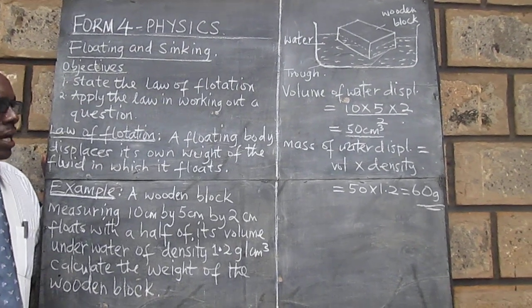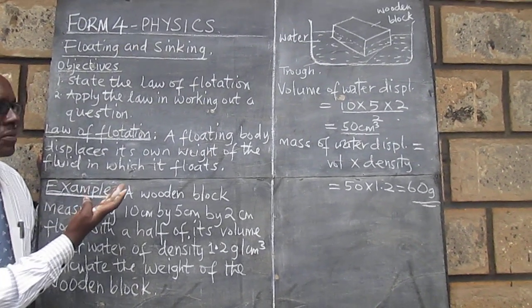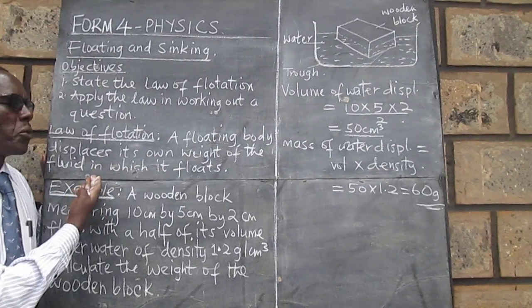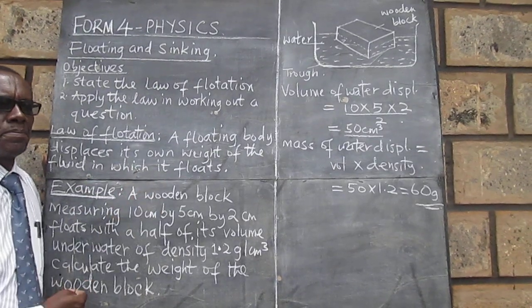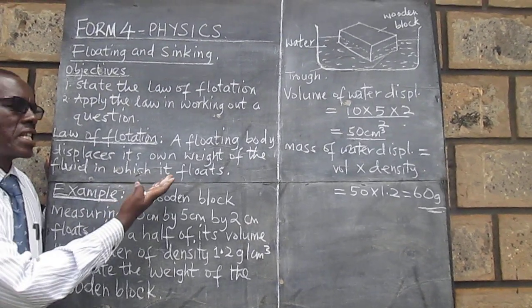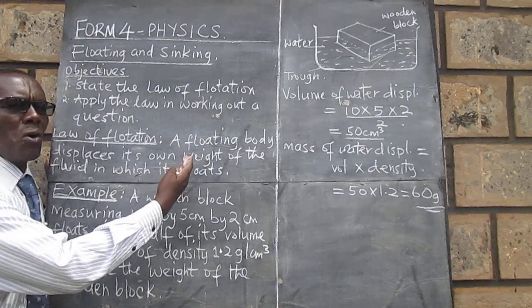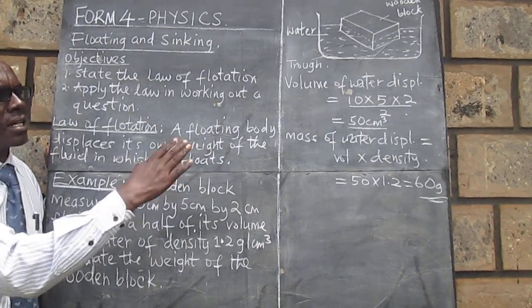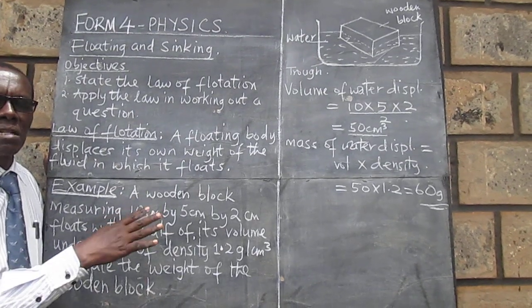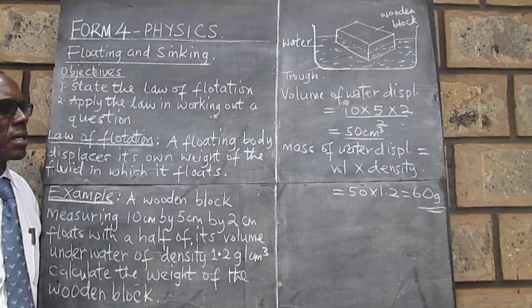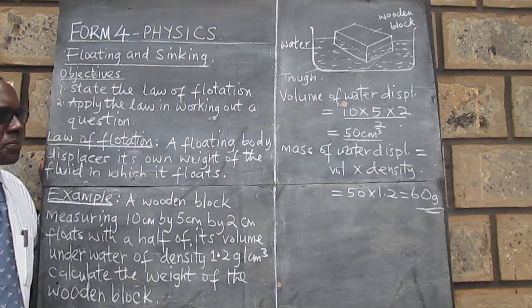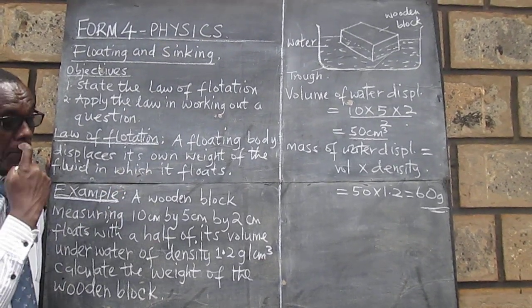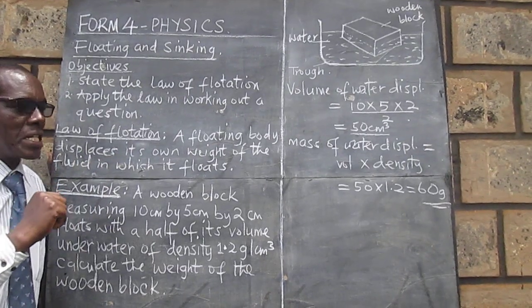So again, going back to the law, a floating body displaces its own weight of the fluid in which it floats. The same we could say displaces its own mass of the liquid or fluid in which it floats. We've gotten the mass, but so that we are in line with the law completely, we will need to convert this now to weight.